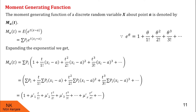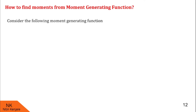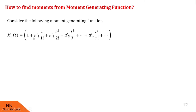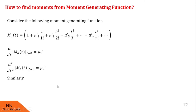Now let us see how to find moments from the moment generating function. The MGF is given by 1 + μ1'·t/1! + μ2'·t²/2! + μ3'·t³/3! and so on. The first moment μ1' can be obtained by differentiating M(A,t) once and evaluating at t equal to 0. Mu2' is the second derivative of M(A,t) at t equal to 0. Similarly, μr' is the rth derivative of M(A,t) at t equal to 0.